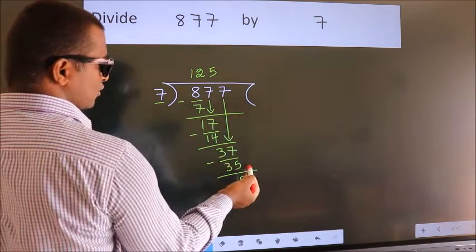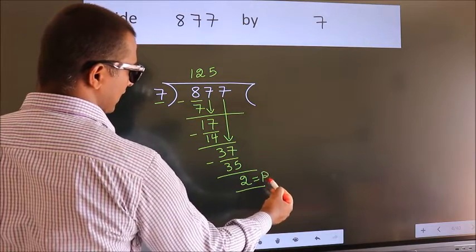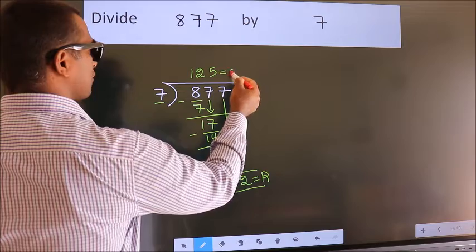No more numbers to bring it down. So we stop here. This is our remainder. This is our quotient.